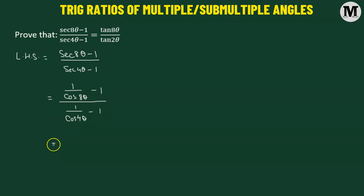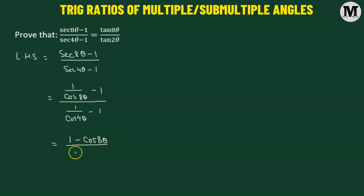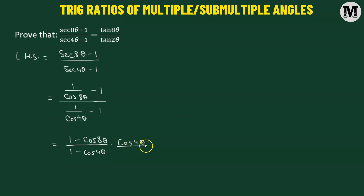Now let's further simplify. This is going to give us 1 minus cosine of 8θ divided by 1 minus cosine of 4θ, multiplied by cosine of 4θ divided by cosine of 8θ.